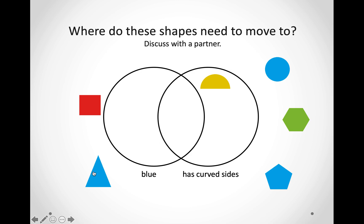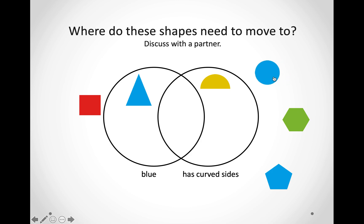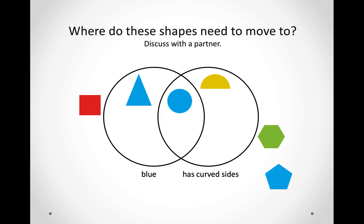Let us look at this triangle over here. Is it blue? Yes, it is. Does it have any curved sides? No, it does not. So, we will only put it in the side that has blue shapes. Let us look at this circle over here. Is it blue? Yes, it is. Does it have curved sides? Yes, it does. So, because it is both blue and has curved sides, we are going to put it in the middle. Now, let's look at this shape over here. Is it blue? No, it's not — it's green. Does it have any curved sides? No, it does not. So, we are not going to put it in any circle.